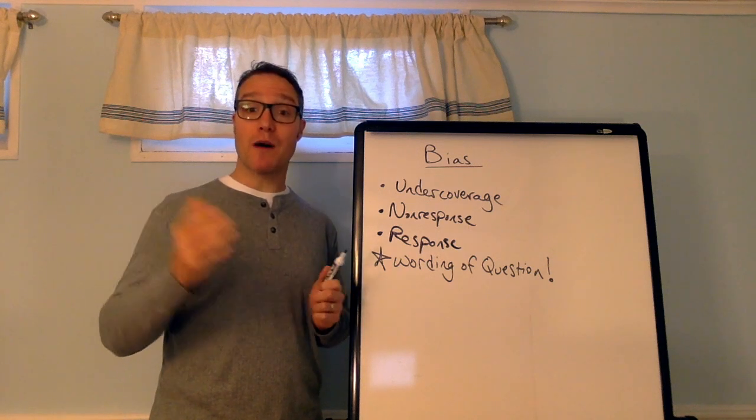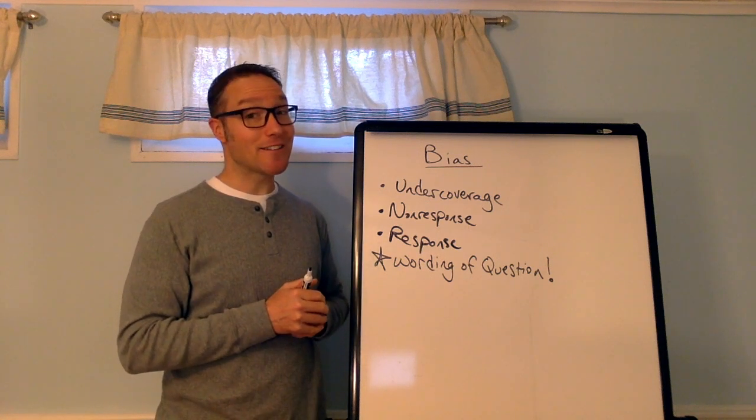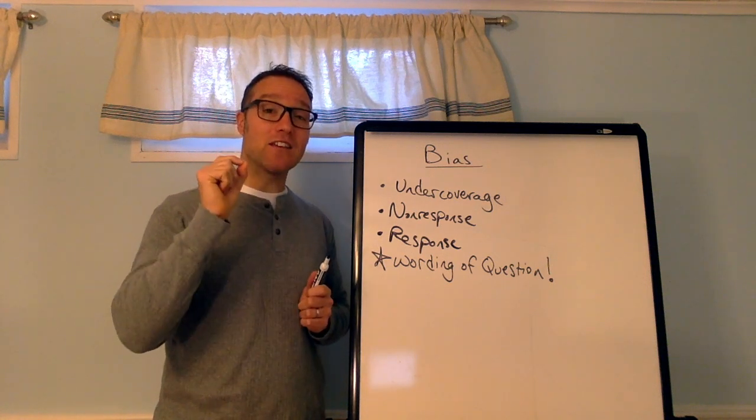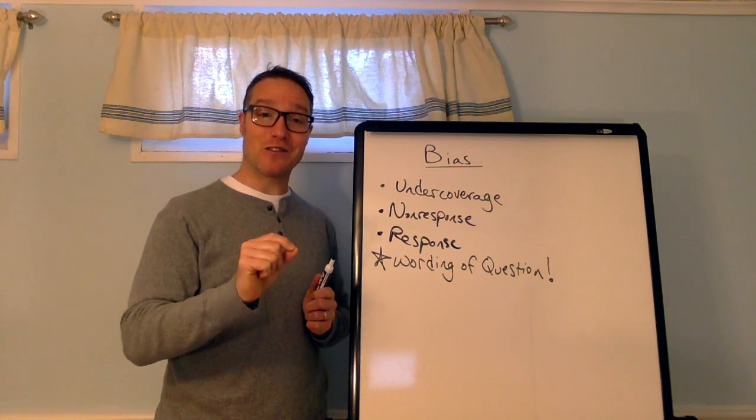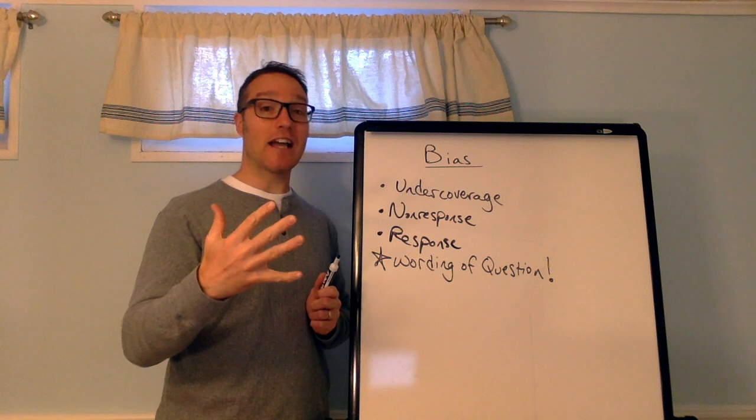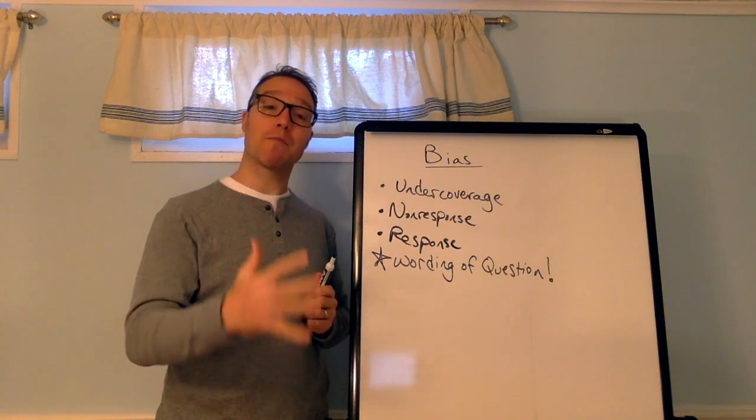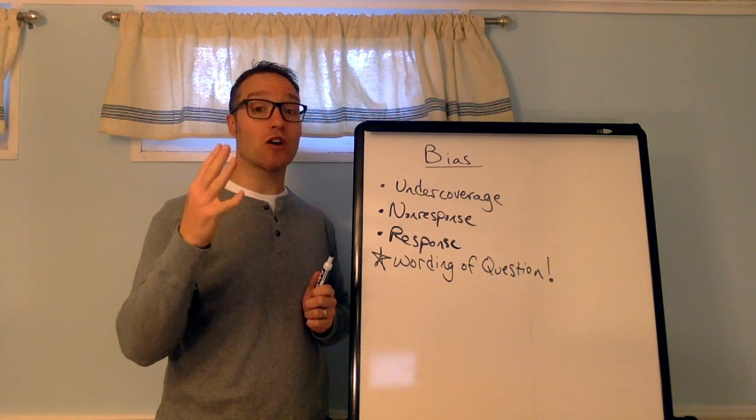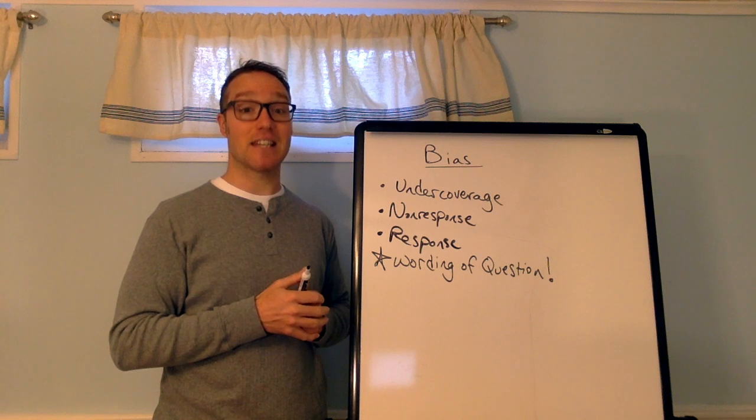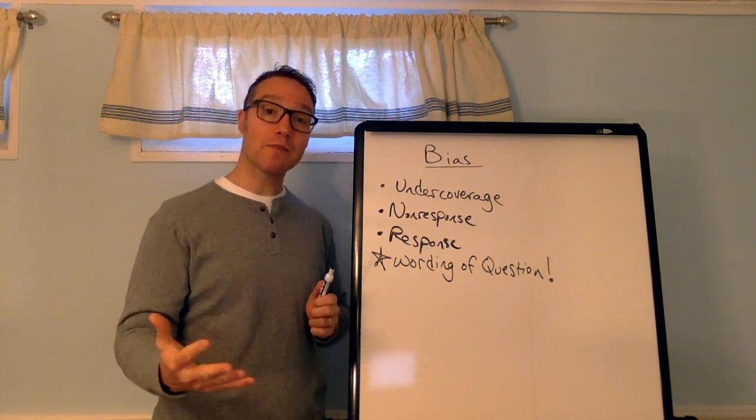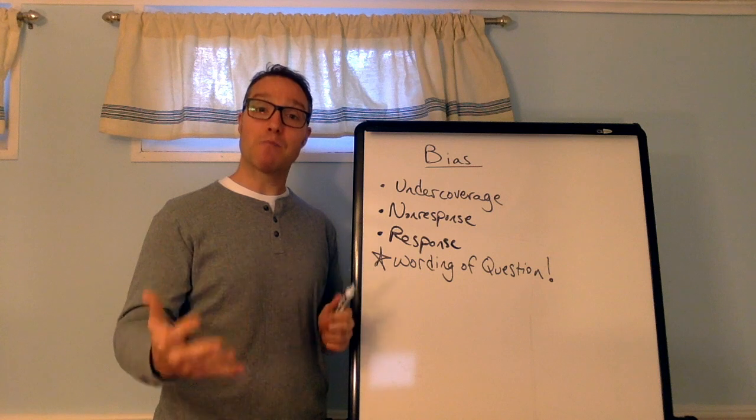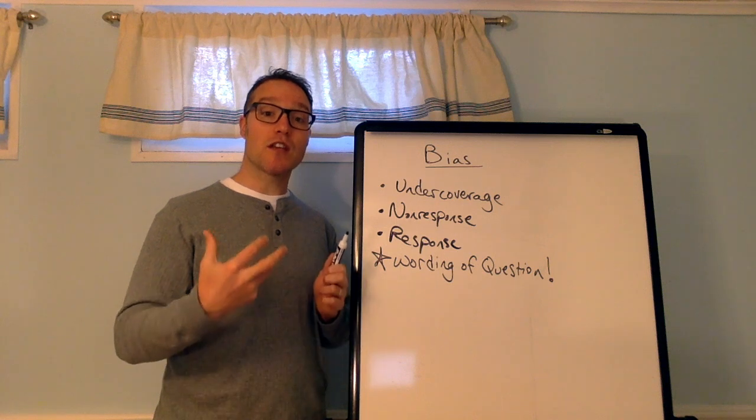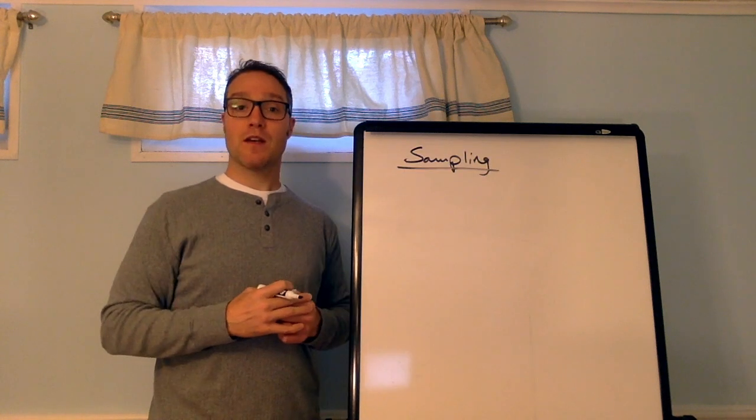So, what can a researcher do to avoid bias or reduce the effects of bias when selecting a sample? Did you say randomization? Right. Randomness is our best defense against bias. So, random sampling allows us to generalize our results to an appropriate population. And random assignment in an experiment allows us to infer causation if the results are statistically significant. So, you want to use random sampling when you're collecting members of a sample. And you want to use random assignment within an experiment so that you can infer cause and effect.